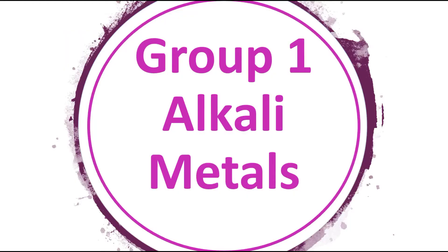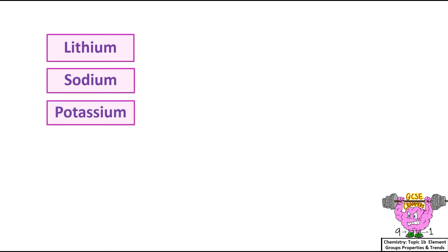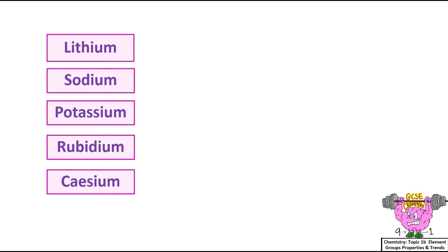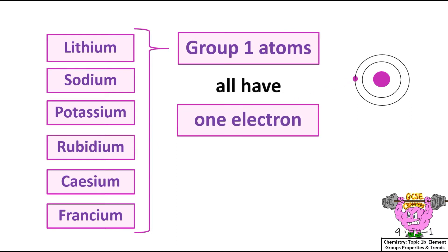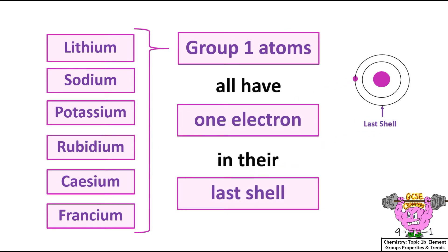Group 1, Alkali Metals: lithium, sodium, potassium, rubidium, caesium, and francium. What does the group number tell you? That all Group 1 atoms have one electron in their last shell.